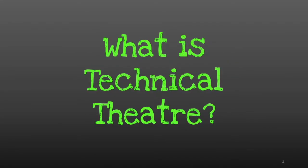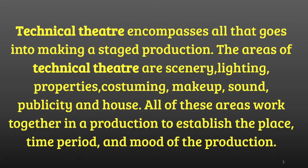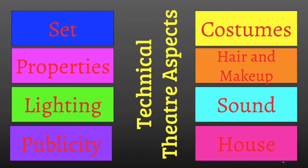What is technical theater? Technical theater encompasses all that goes into making a stage production. The areas of technical theater are scenery, lighting, properties, costumes, makeup, sound, publicity, and housework. All of these areas work together in a production to establish the place, the time period, and the mood. Here are the eight technical theater aspects that you can try out and find out which one you like best.